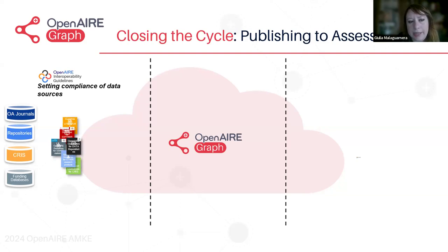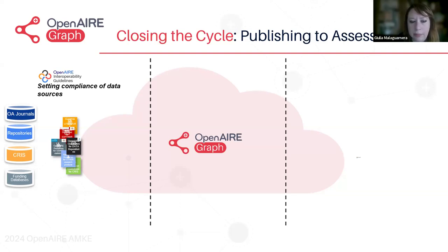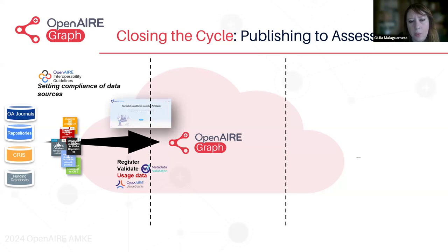Where OpenAIR can support here is that we work together with our network of experts in the creation of guidelines that help in collecting literature, software and data repositories, and expose this kind of data to make it interoperable with other sources. From this, we create a service called OpenAIR Provide that aggregates the data sources that are registering.